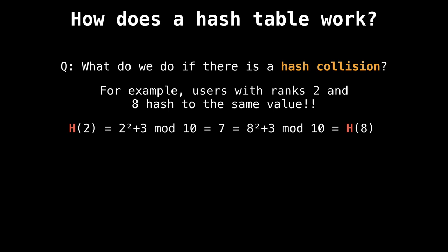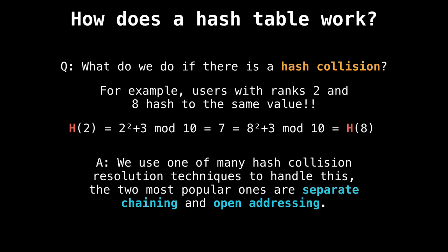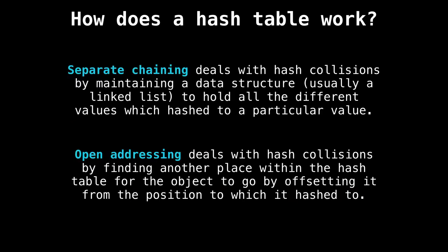However, how do we handle hash collisions, for example, users who have ranks two and eight, have the same hash value, this is problematic. Because we don't have another place to put them inside our table, they would index into the same position. And the answer is we use one of many hash collision resolution techniques to handle this. There are many, but the two most popular ones are separate chaining and open addressing. The idea behind separate chaining is that we deal with hash collisions by maintaining a data structure, usually a linked list to hold all the different key value pairs, which hash to some particular value. Open addressing is slightly different. It deals with hash collisions by probing and finding another place within the hash table offset from the place where we originally hashed to. So in open addressing, everything is kept inside one big array. In separate chaining, you have multiple auxiliary data structures.